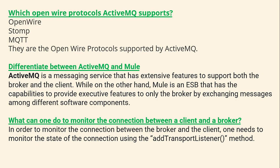Difference between ActiveMQ and Mule: ActiveMQ is a messaging service with extensive features to support both the broker and the client. Mule, on the other hand, is an ESB (Enterprise Service Bus) that provides features for the broker by exchanging messages among different software components, essentially excluding the client.